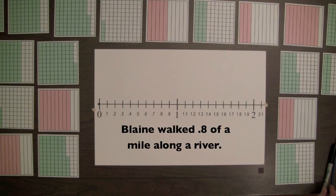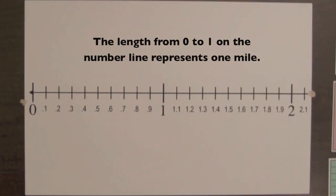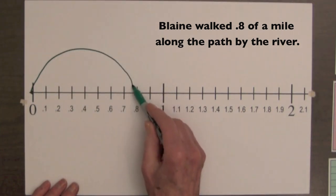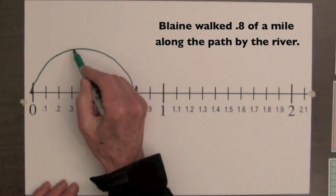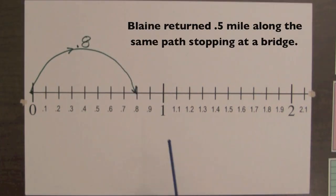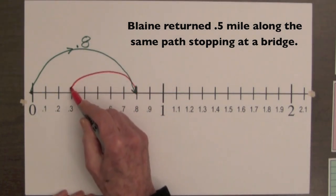Blaine walked 8 tenths of a mile along a river. If the length from 0 to 1 on the number line represents 1 mile, we can represent the distance Blaine walked by drawing an arrow from 0 to 8 tenths. Then Blaine returned 5 tenths of a mile along the same path, stopping at a bridge. Starting at 8 tenths on the number line, a second arrow can be drawn back towards 0, 5 tenths.